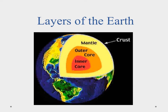As the earth cooled, it formed these different layers. The heavier elements, like iron and nickel, settled in to form the inner core. As we move outward from the inner core, the materials tend to be a little bit lighter in nature. So density played a role in forming these different layers of the earth.